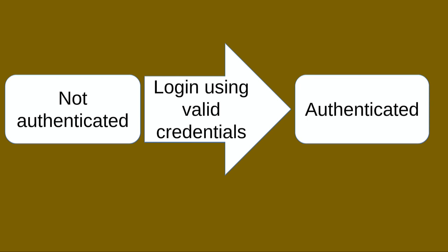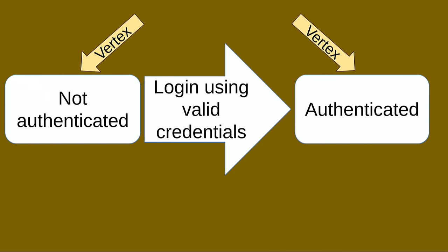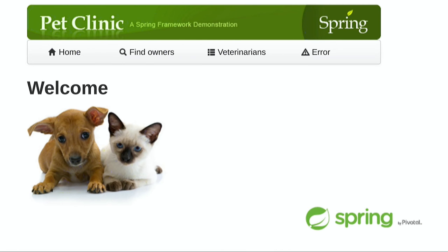Let's move on to a more realistic example. The Spring project has a great demonstration project — the Pet Clinic — which you can run offline as a Maven project. It downloads all dependencies, launches locally, and gives you a website you can use for testing. This is the home page of that demo project. If I were to model it using model-based testing, I'd create a state chart showing what you can do from this page — a start node pointing to a 'home page' vertex, with transitions to 'find owners,' 'veterinarians,' and so on.